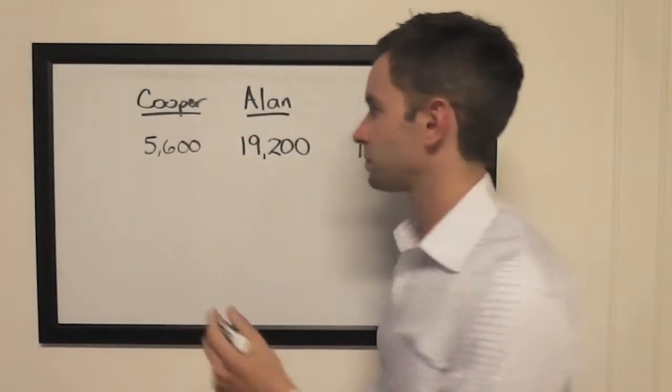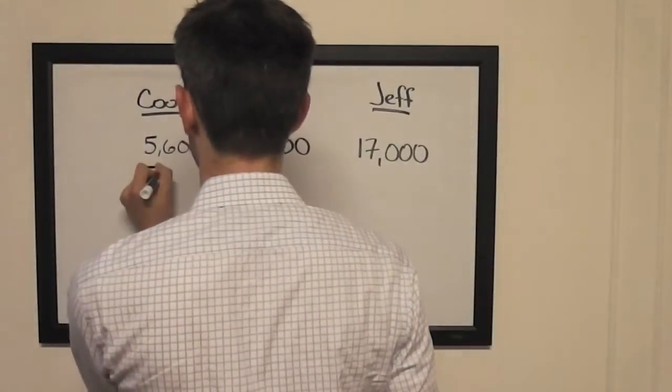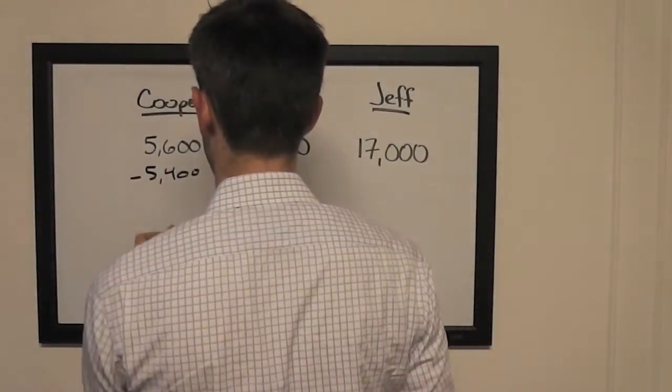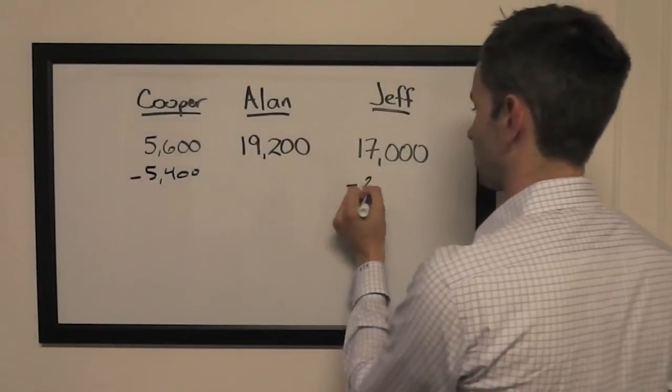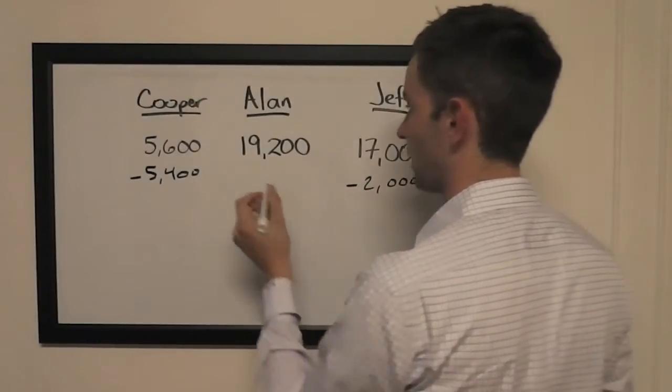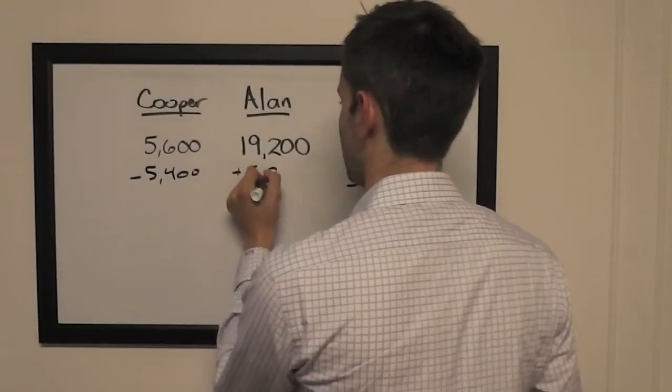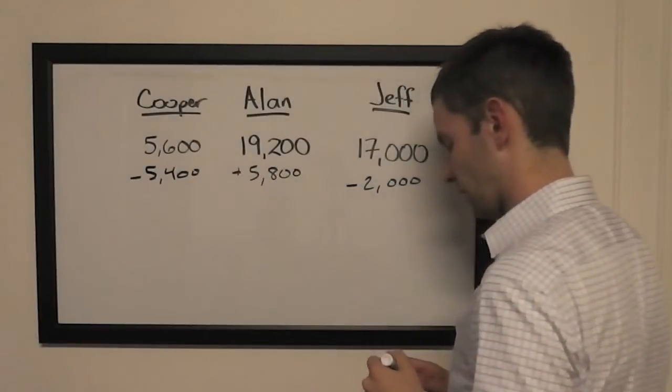As it turns out, Cooper got it wrong and wagered $5,400. Jeff got it wrong and wagered $2,000. And Alan got it right and wagered $5,800.